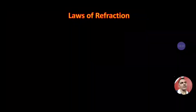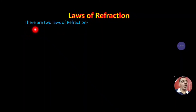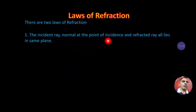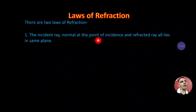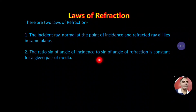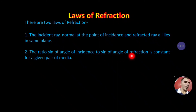Next, the laws of refraction. There are two laws of refraction. The first law states that the incident ray, the normal at the point of incidence, and the refracted ray all lie in the same plane — incident ray, normal, aur refracted ray ye teeno ek hi plane mein honge. This law of refraction is similar to the second law of reflection.